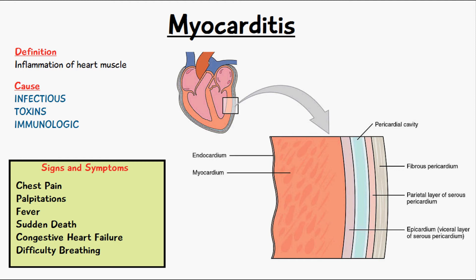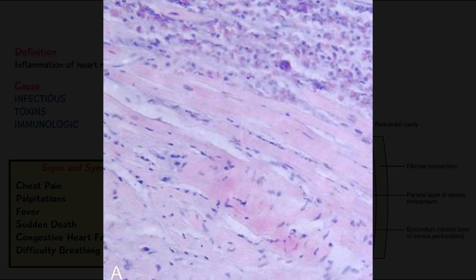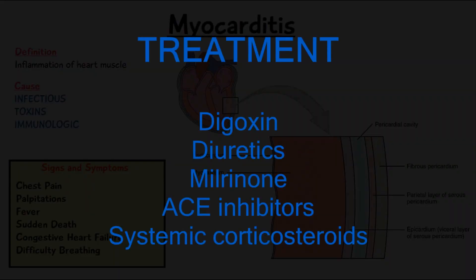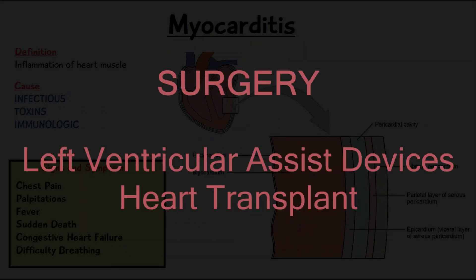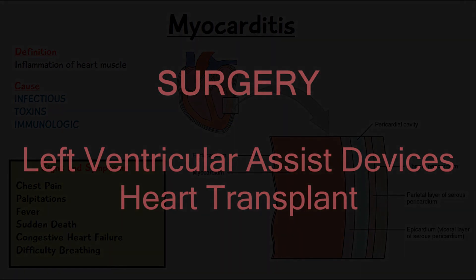Another diagnostic approach is a biopsy of the myocardium. You take a small tissue sample, send it to a pathologist, and in cases of myocarditis there will be presence of edema and inflammatory infiltrates, with lymphocytes and macrophages. Treatment involves medications like digoxin and diuretics for heart failure, inotropes like milrinone in the acute phase, and ACE inhibitors. In severe cases, systemic corticosteroids, left ventricular assist devices, or heart transplantation may also be used.